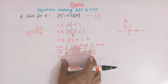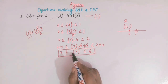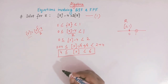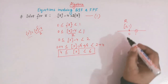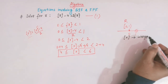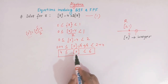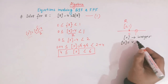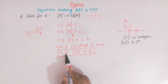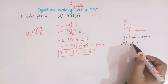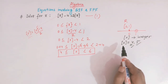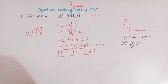We now analyze this inequality. The greatest integer of x lies between 4 and 6, including 4. From the definition of the greatest integer function, it always gives an integer. So the valid values of the greatest integer of x are 4 and 5, as these are the two integers in that range with 4 included.